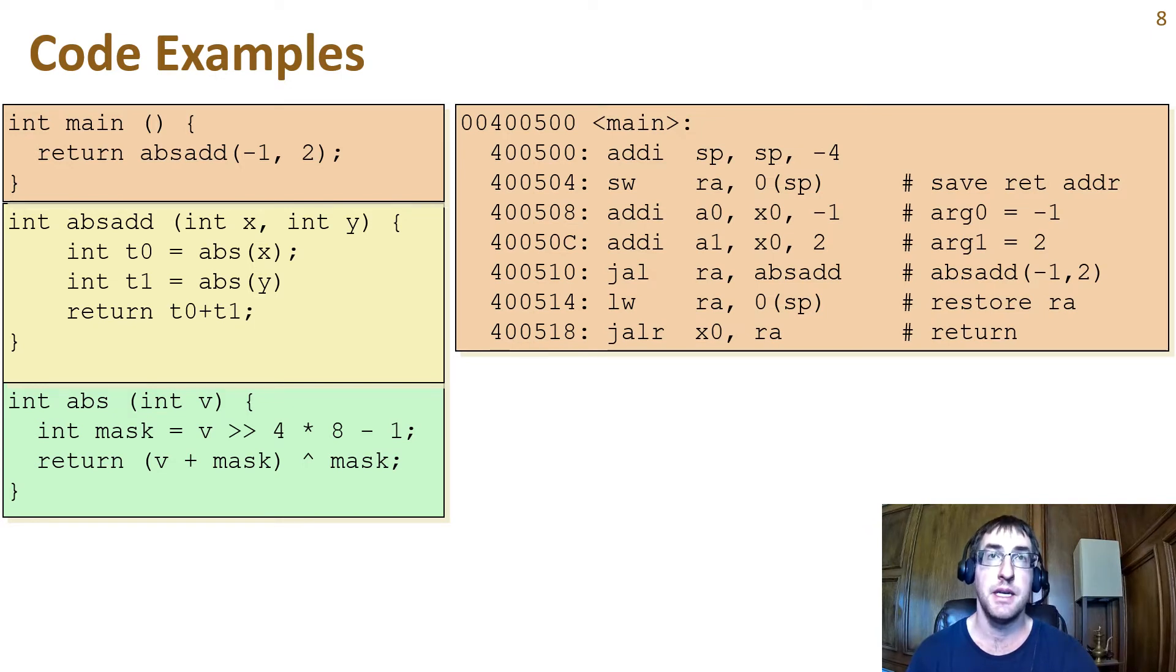Here's one possible disassembly of main. The first line makes room on the stack, so that the second line can store the return address to it.